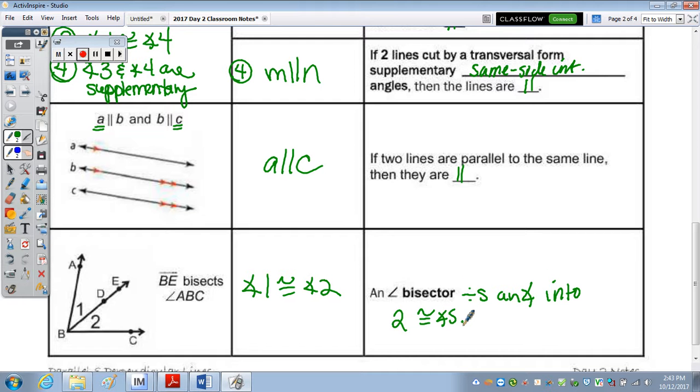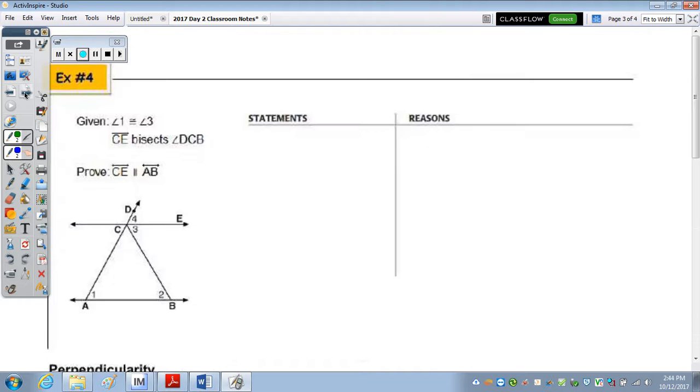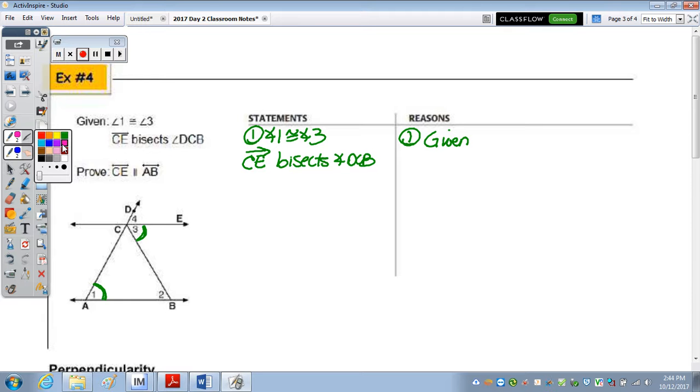So take a moment and read your first proof for these notes. The proof: we're told that angle 1, so our first step is to always write the givens. Angle 1 is congruent to angle 3, and CE bisects angle DCB. So I know that angle 1 is congruent to angle 3, and that's not one of our angle pairs. We're trying to prove that CE is parallel to AB.